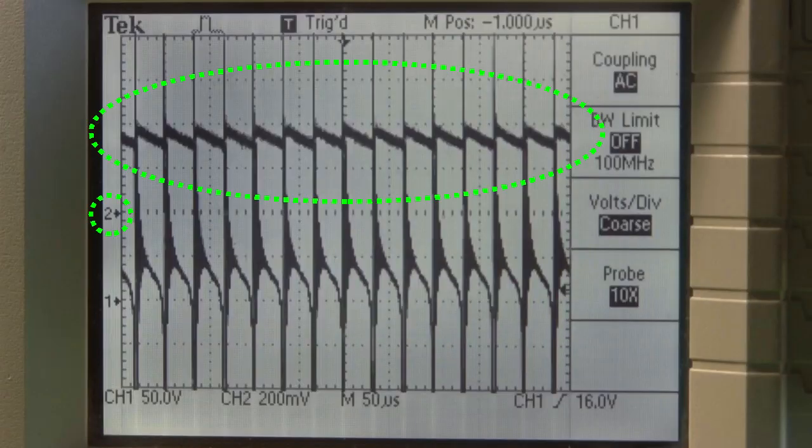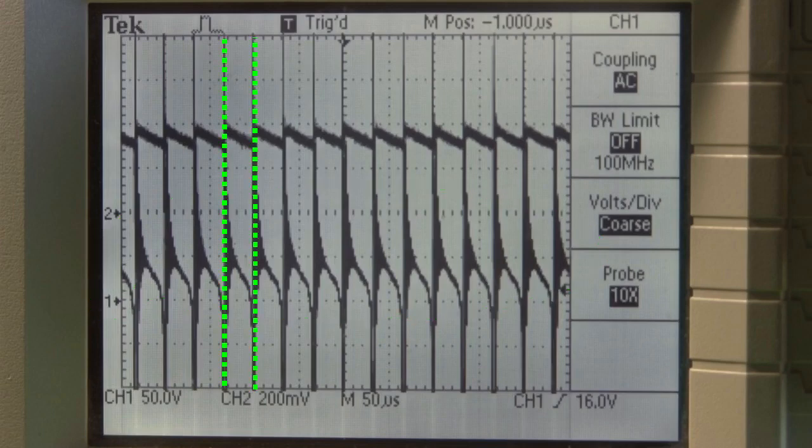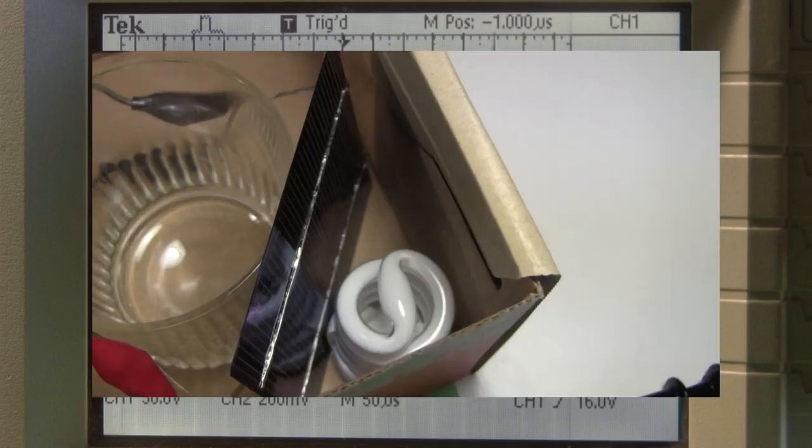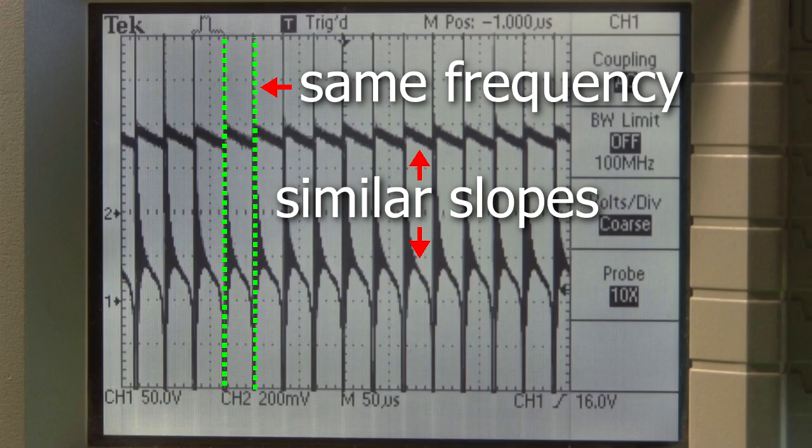Channel 2 on the oscilloscope is the voltage output of the solar cell, and channel 1 is the output of the Joule Thief that feeds the light bulb. As you can see, there is a correlation since their frequencies match. Remember, this is really measuring the optical output of the light bulb. And given how well it matches the electrical output of the Joule Thief, the solar cell's response time is fairly good.